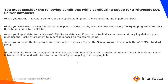Now the things to consider when configuring Sqoop for Microsoft SQL Server databases: when you use the --append argument, the Sqoop program ignores the argument during import and export. When you write data to a flat file through Sqoop and use double, real, or any float data types, Sqoop writes only the integer value to the flat file. When you import data from Microsoft SQL Server and the source table does not have a primary key defined, you must specify the --split-by argument to import the data based on a column name.